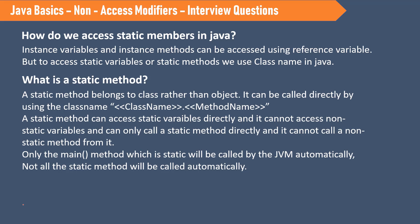How do we access static members in Java? We can access static members directly without creating an object. If it is in the same class, we can access it directly. If it is in a different class, we have to import the class first and use the class name dot variable name. What is a static method? A static method belongs to the class rather than the object, and it can be called directly using class name dot method name, or directly by method name within the same class.